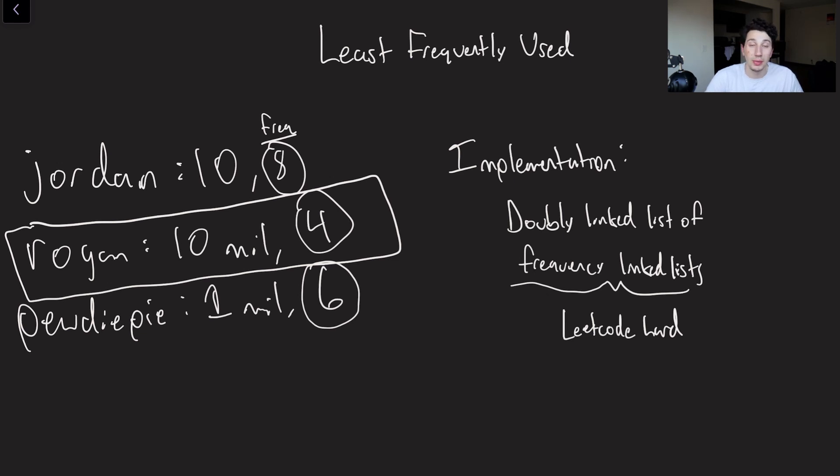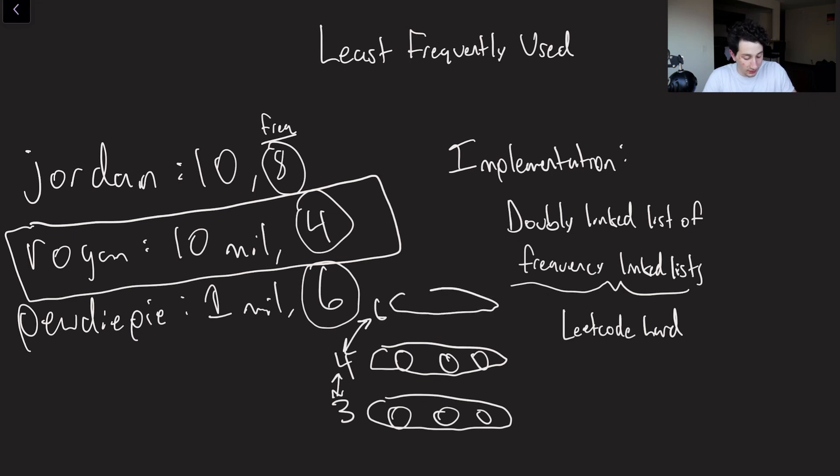So if we had to evict one of these entries, which one would it be? It would be the Joe Rogan entry because it was least frequently used. It's only been used four times, as opposed to the other two more popular entries. So again, doubly linked list of frequencies where it would be like, here are all the nodes that have been accessed four times, here are all the nodes that have been accessed three times, blah, blah, blah. And then these in and of themselves are linked up. And then you might have one linked to six. Again, look up the implementation yourself.